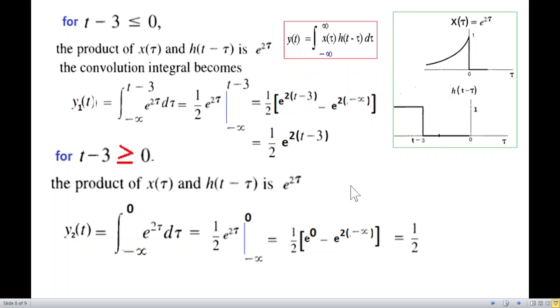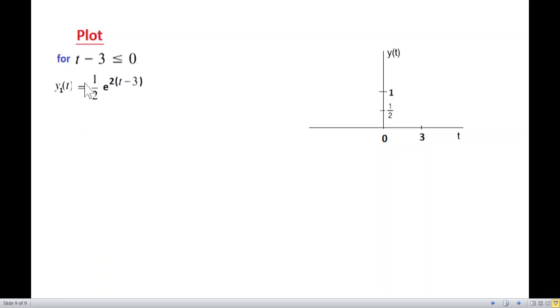And now we need to plot. For t less than 0, this was the value. And for t minus 3 greater than 0, this was the value. Now from here, we can just manipulate this. t minus 3 less than 0 implies that t is less than 3. So we mark a point here at plus 3. Similarly, in this case, t minus 3 greater than 0 implies that t is greater than 3. So again, we'll be talking about on this region.